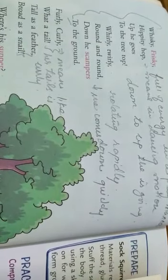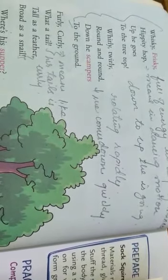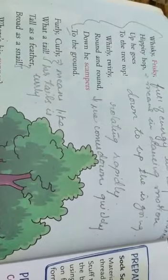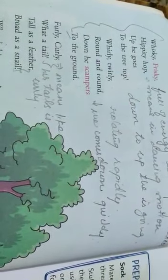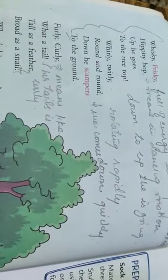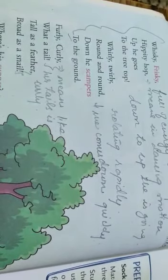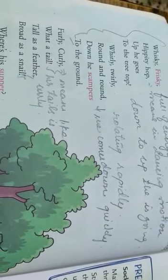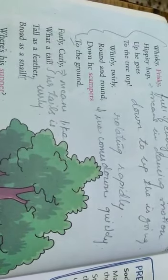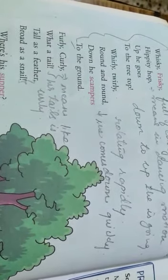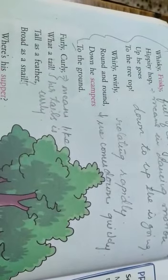Today I am starting with English Literature, lesson number 1, The Squirrel. In this poem, we are talking, the poet is talking about a squirrel and he is very happy, playful, energetic.